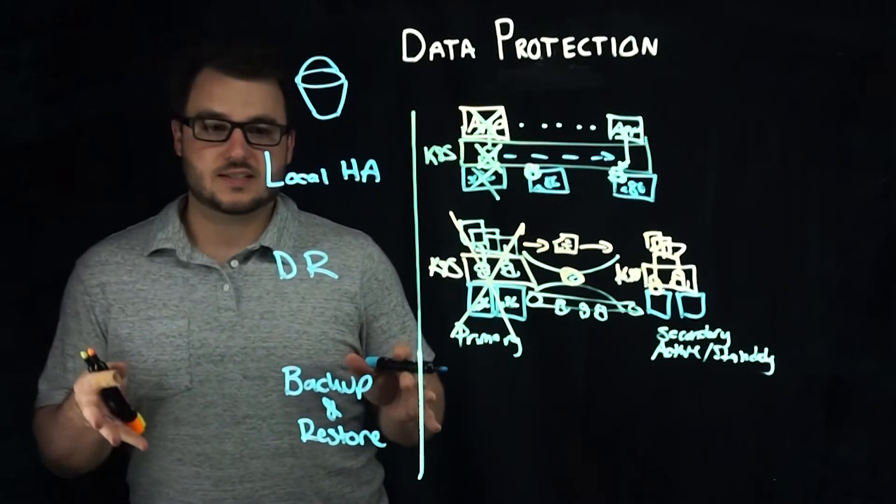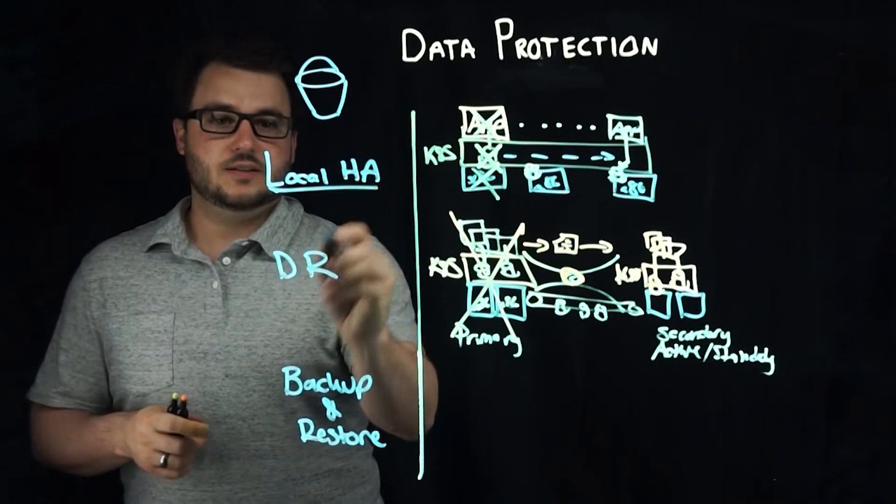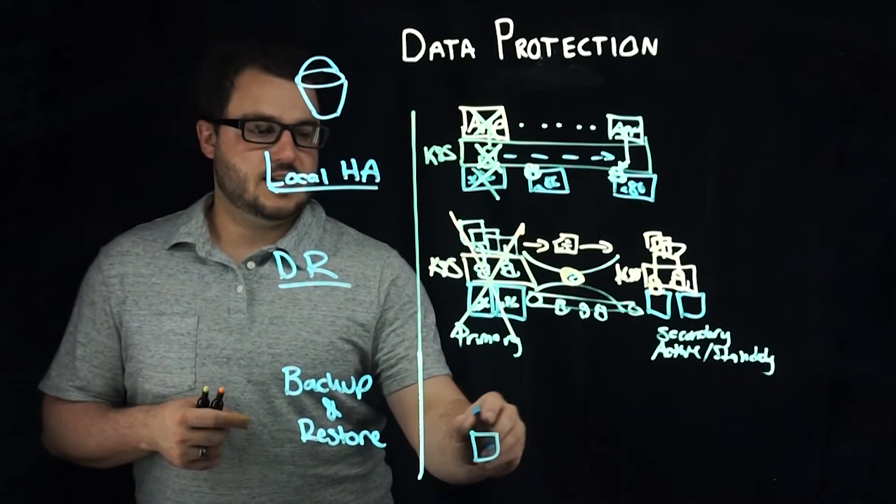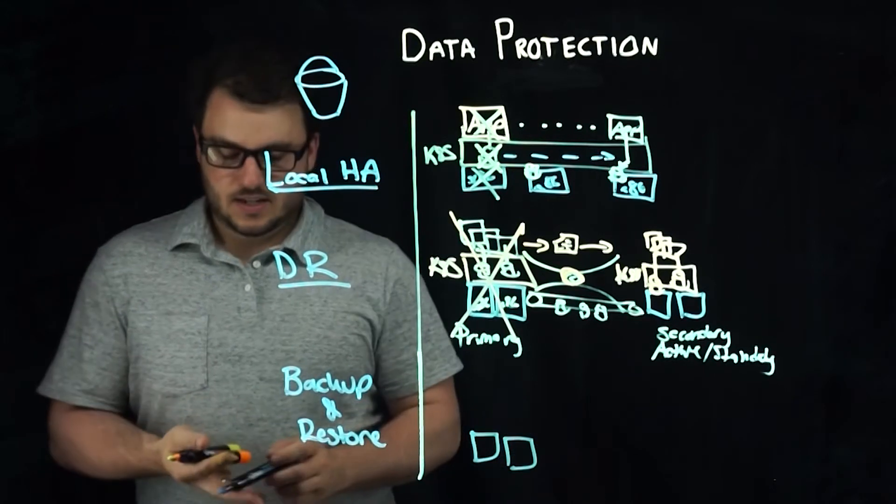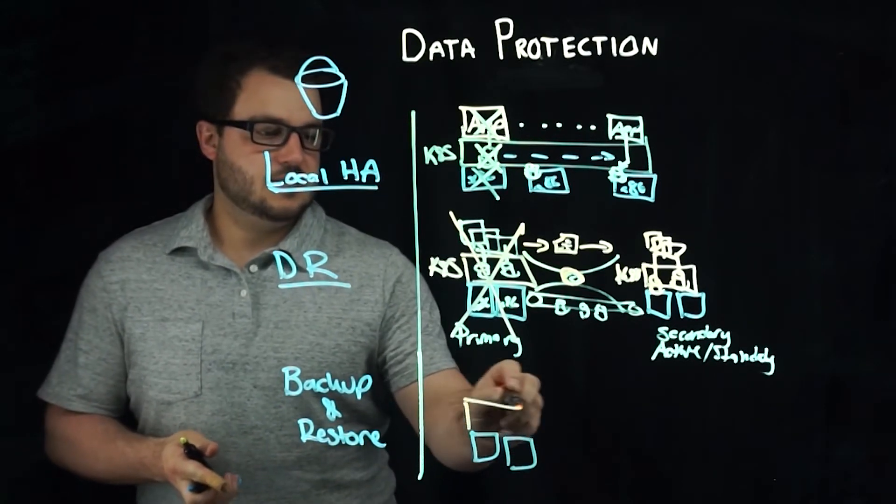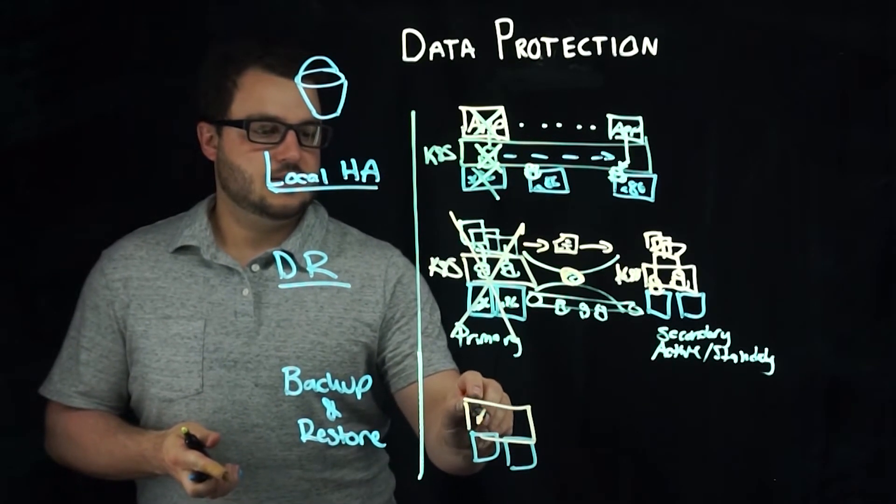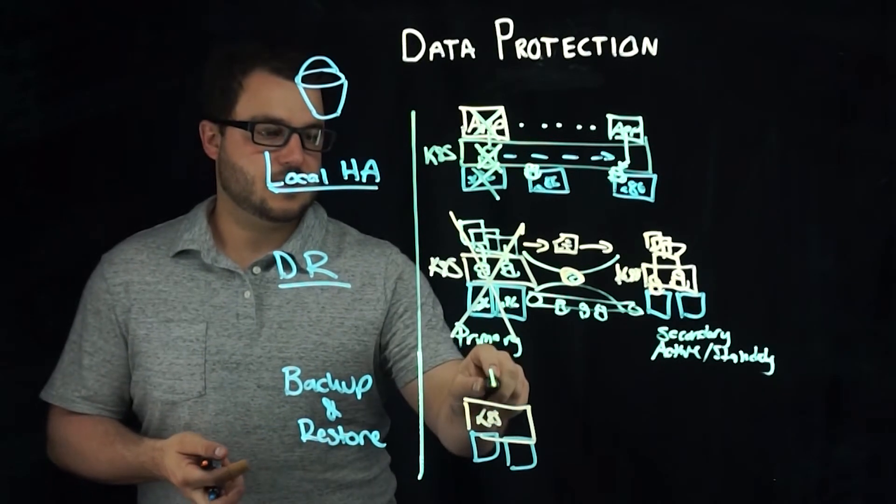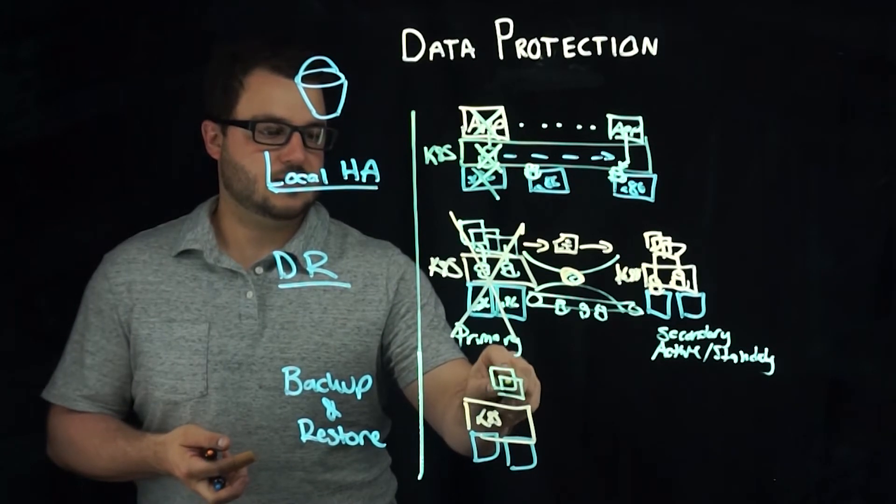Thirdly, in terms of the data protection buckets that we're talking about here, we've covered local HA and DR. The third is backup and recovery. So again, you would have a Kubernetes cluster, some application or applications running on that cluster, some persistent state.